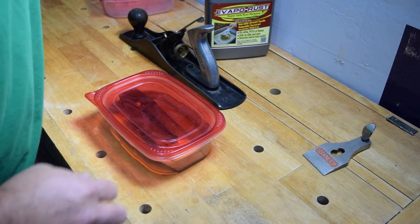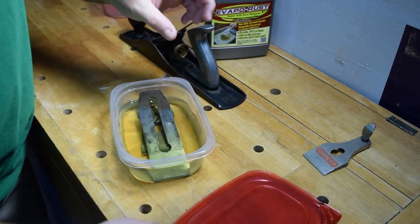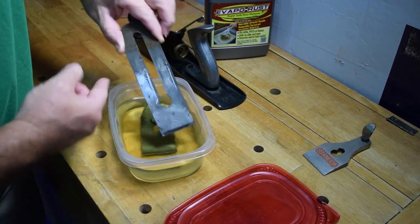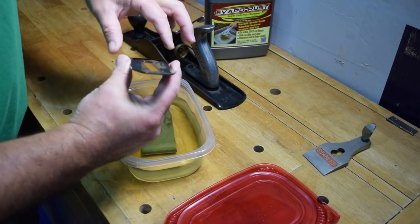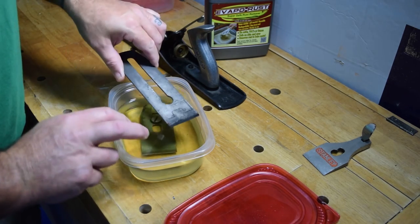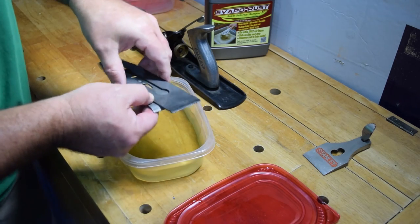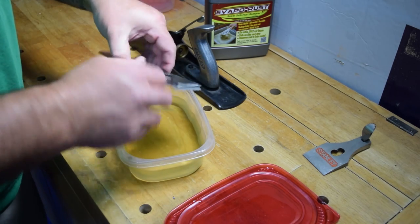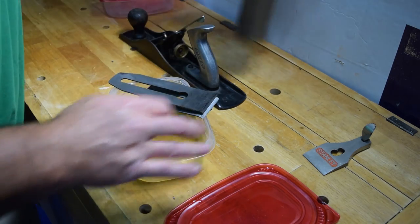All right, here we are the next day. I let the iron and the chip breaker soak overnight. And man, what a huge difference. This stuff really, really works very, very well. So I'm going to take this inside. Once again, as per the instructions, I'm going to bring it inside, clean it off with warm water, I believe it said, just to rinse it down.